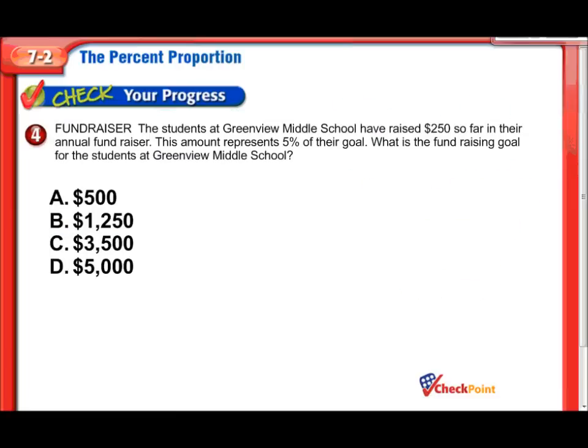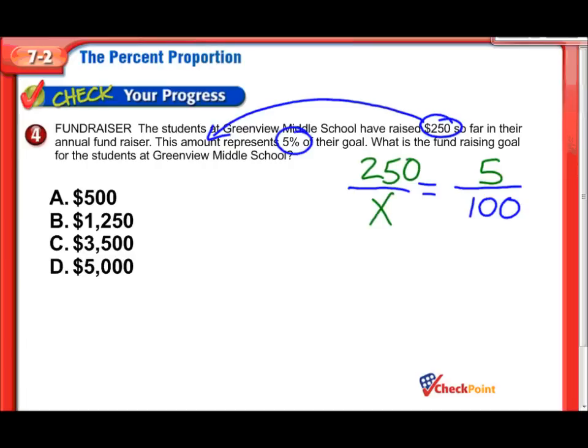Word problem. The students at Greenview Middle School have raised $250 so far in their annual fundraiser. This amount. What amount? It's the 250. This amount is 5% of their goal. What is the fundraising goal for the students at Greenview Middle School? Well, set up my proportion. Let's plug some numbers in here. Well, it's 5%. So that goes here. Now I have to figure out what the 250 is. Is that the part or the whole? Well, according to this question, they're still raising money. And they want more. The 250 is only the 5% of their goal. So that's the part. 250 is the part. It's not the whole thing. They want to raise more money. So the whole would be the denominator. The part they've raised so far is 250.